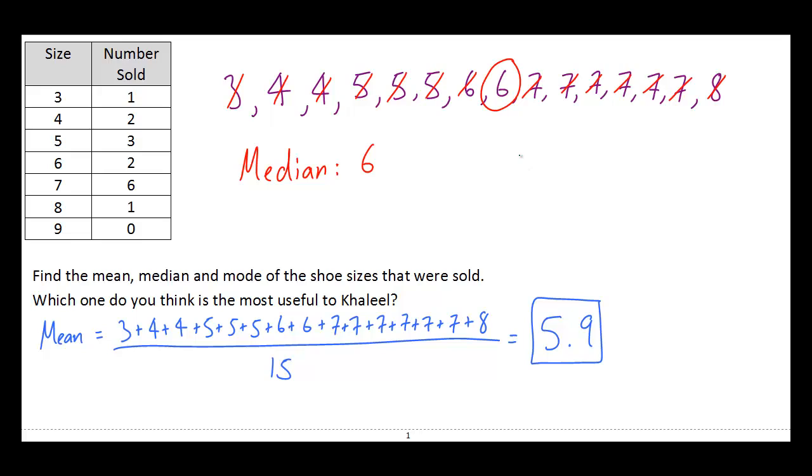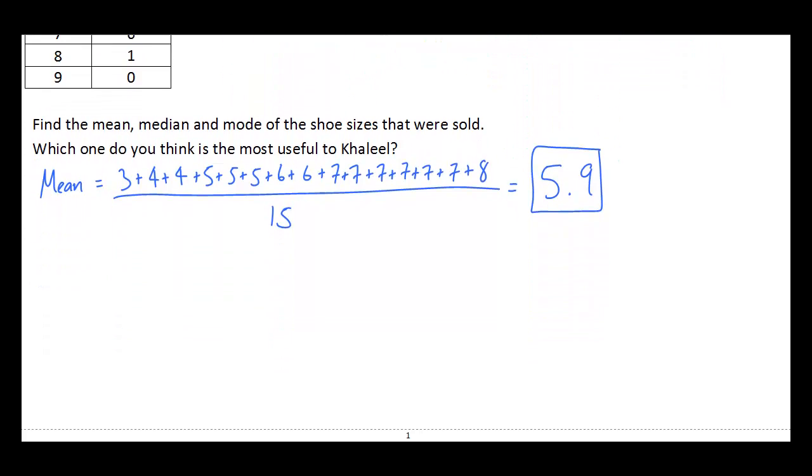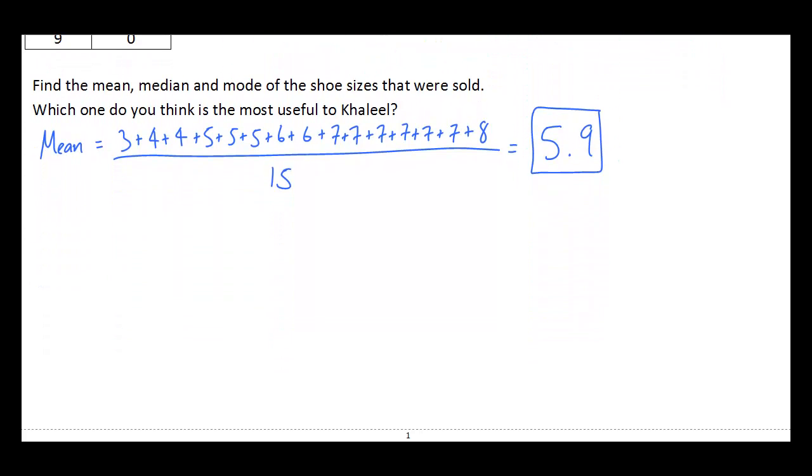And the last step is to find the mode. And the mode is simply our most often size, which in this case is 7. So let's just do a quick recap here. Our mean is 5.9, our median is 6, and our mode is 7.